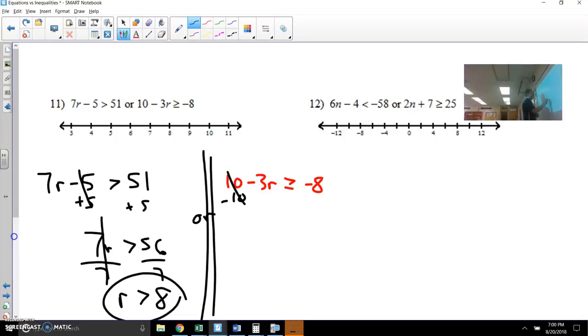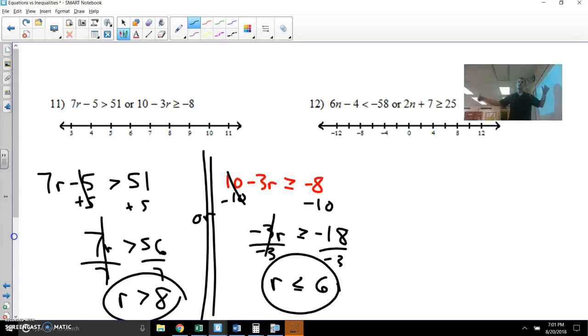Let's subtract 10. Negative 3r is greater than or equal to negative 18. Let's divide negative 3. And now the sign has to flip. We didn't do that here because you divided by positive 7. In this case, you are going to have to flip it because you divided by a negative. And essentially, you're putting the negative and the positive number lines like on opposite sides. So that's why it's real important to flip that.